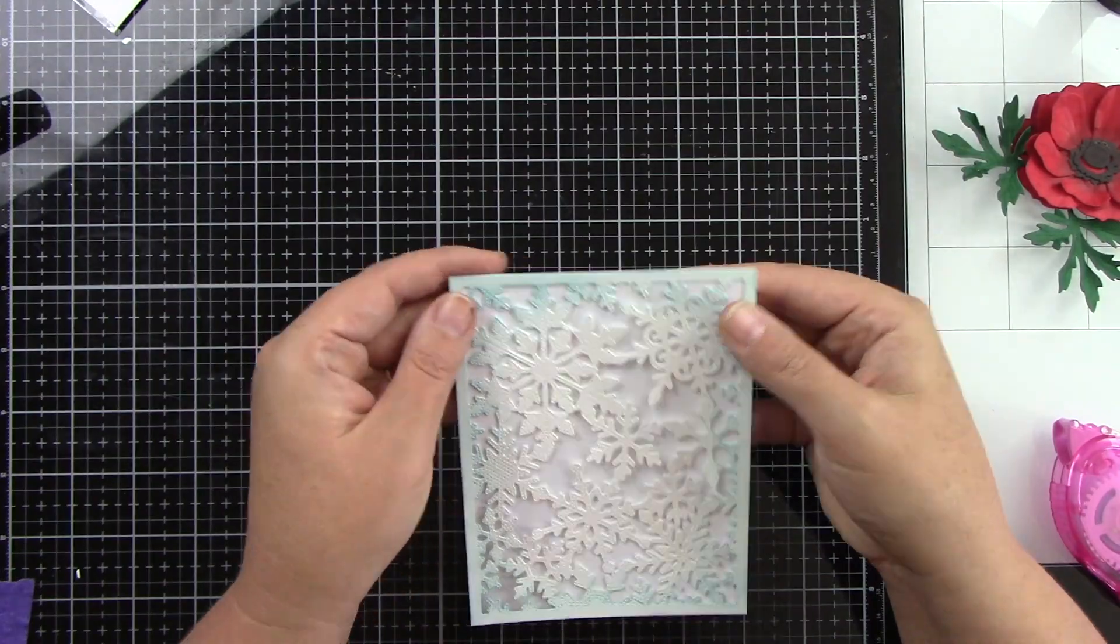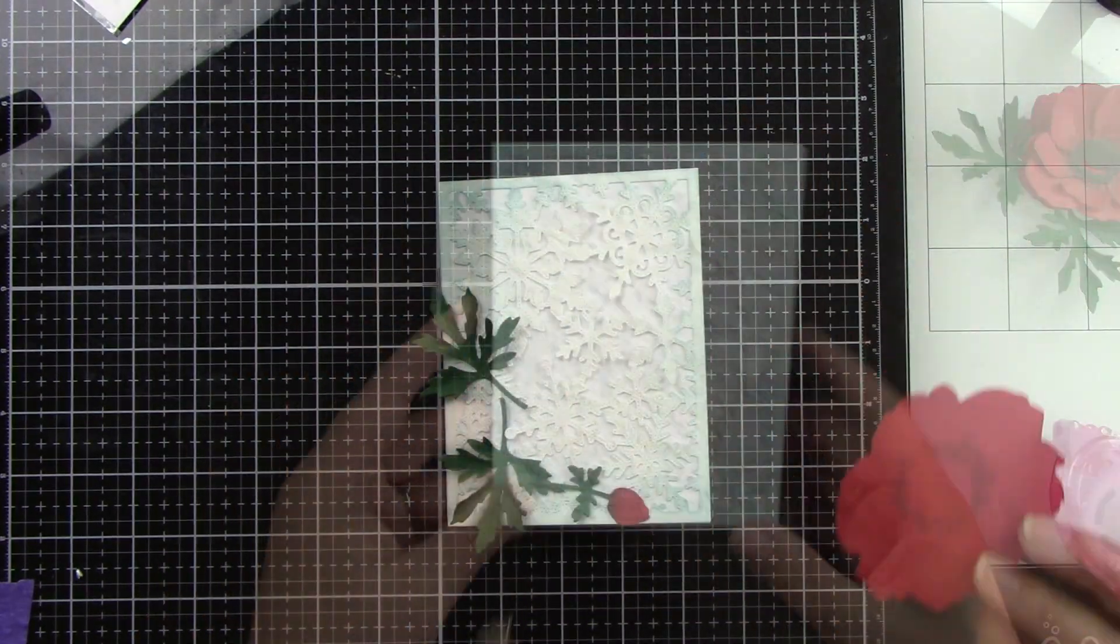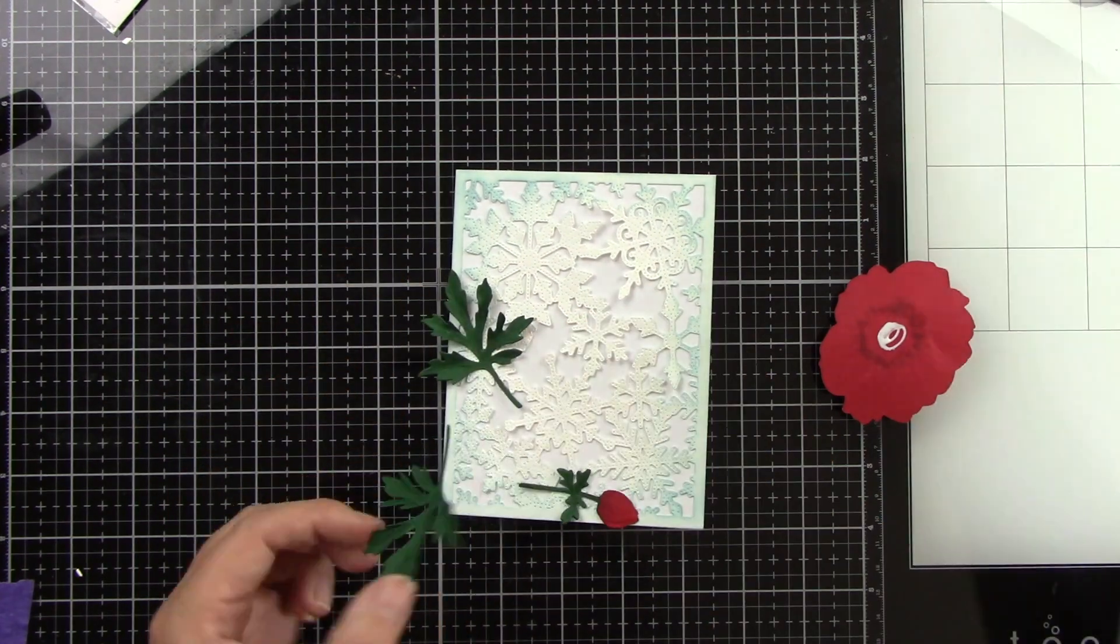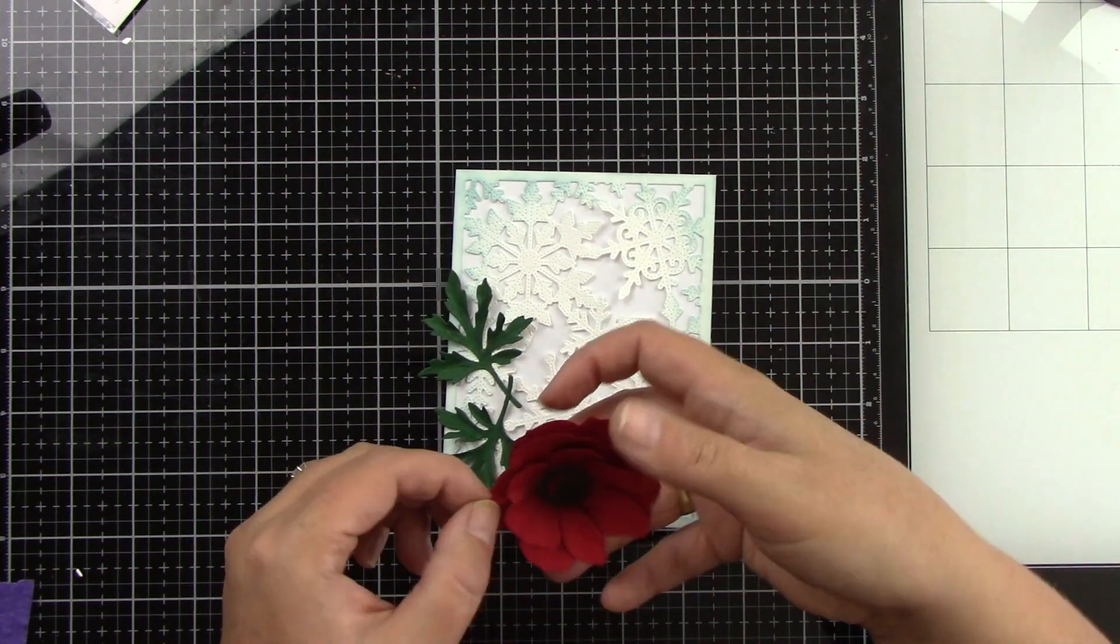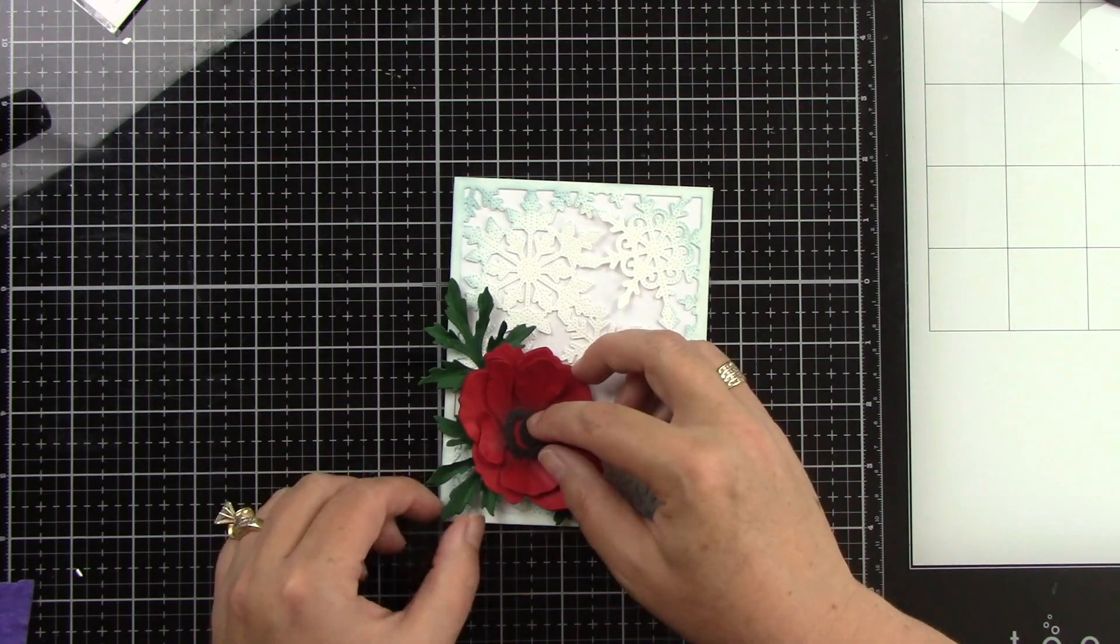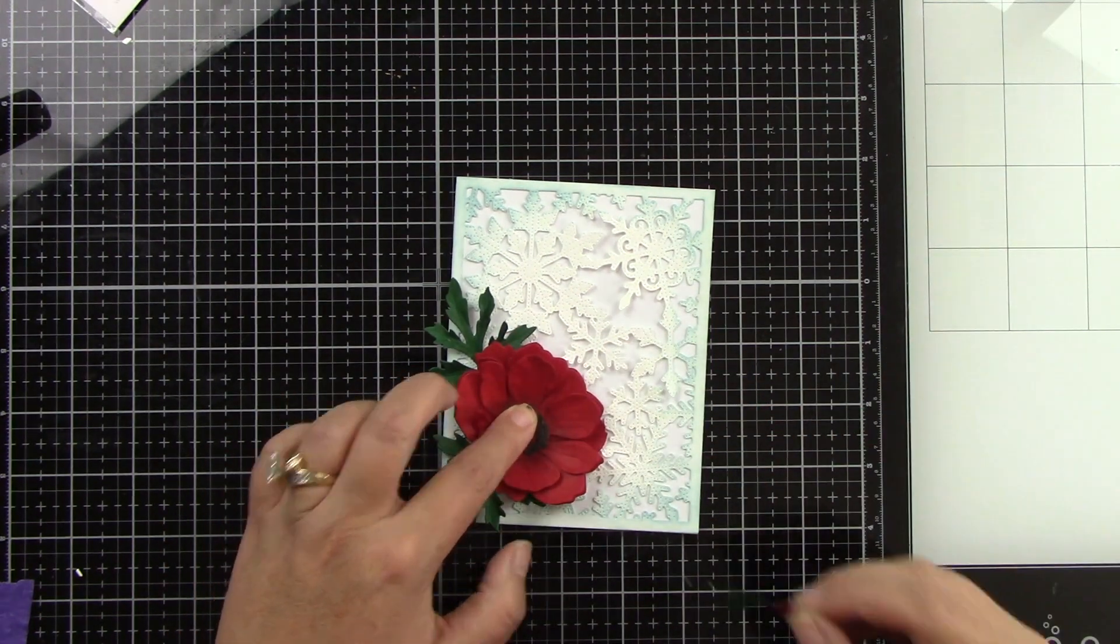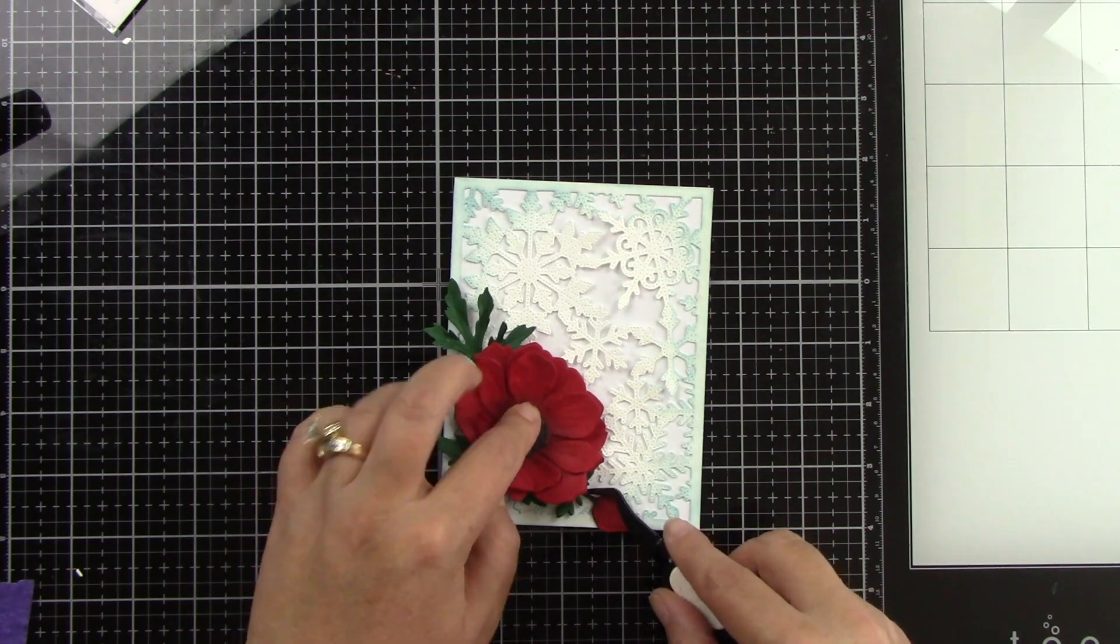Then we're going to glue down the flower. I'm just going to use some liquid glue and I'm going to line this up to the bottom left, adding some glue behind the leaves, the flower, and then we'll tuck in that cute little bud at the bottom. I didn't want to use a ton of flowers because I did not want to cover up that beautiful snowflake cover plate die.